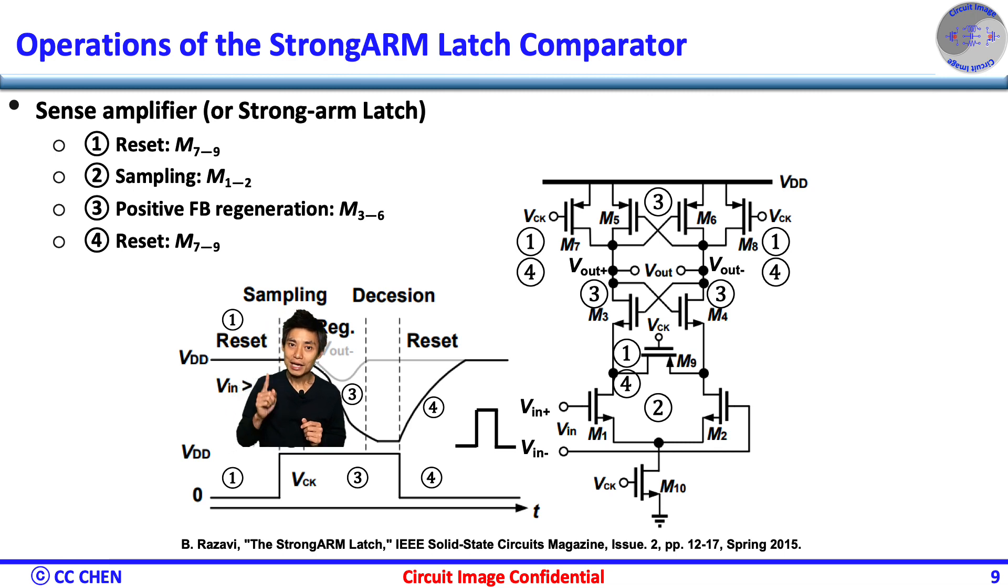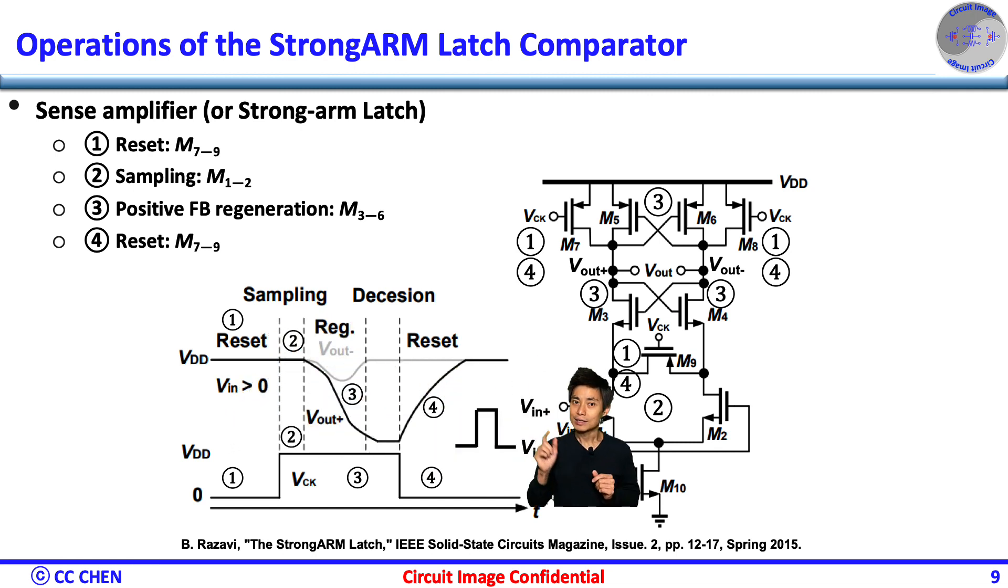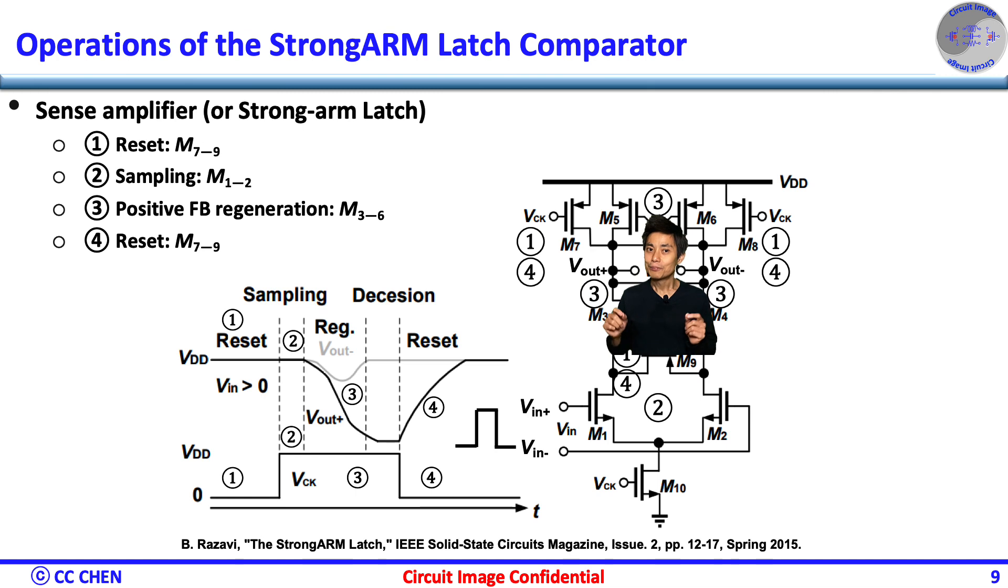during the clock rising edge and the short time of delay, the input senses the positive pair while all reset devices are turned off. Third, then both output levels are dropped together and Vout+ will keep dropping down to the ground.